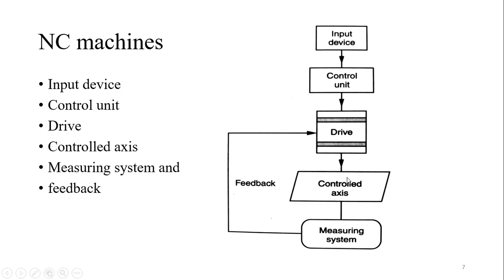The drive system will optimize its performance and functions using this feedback from the axis. So this is how the NC machine works: first the input, then the control unit, then the drive, then the controlled axes, then the measuring system which is connected as feedback. The feedback is directly fed to the drive system and it adjusts accordingly.